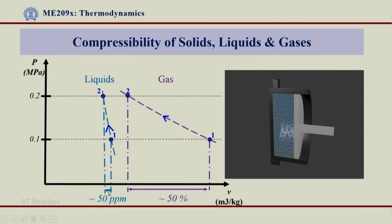We had only some ppm level change that happened in the volume and the piston hardly moved as compared to gases where the reduction was of several orders here, but in this case it is just 50 ppm. That means, it is hardly anything as compared to this, actually has been shown in an exaggerated manner. In comparison to gas volume change this is hardly anything.